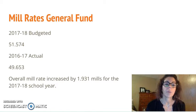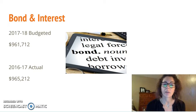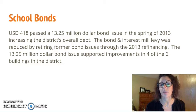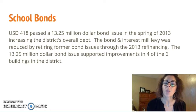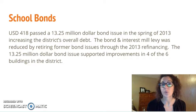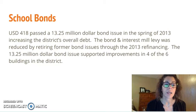In studying mill rates, we had an overall mill rate increase of 1.931 mills for fiscal year 18. For bond and interest, that dollar amount is slowly going down. We did have a school bond in 2013 — we passed a $13.25 million bond issue — which increased the district's overall debt, but we were retiring a former bond issue at the same time, and when we did the 2013 refinancing the mill levy was actually reduced. That bond issue supported improvements in four of the six buildings within the district. We are currently undergoing a facility review with an outside agency and considering a potential bond in future years.